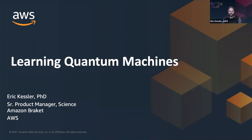Hello and welcome everybody. My name is Eric Kessler. I'm a senior product manager for Amazon Braket. I run a team of applied scientists in the service, and I'm super excited to be here. What I wanted to tell you about today is broadly the topic of quantum machine learning and variational algorithms, and how we at AWS see the intersection between machine learning and quantum computing.